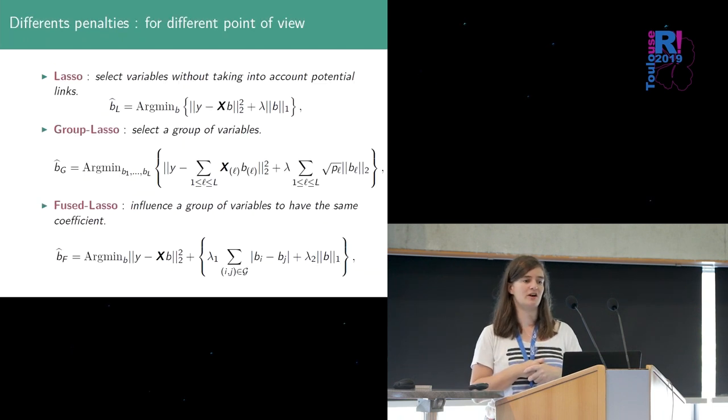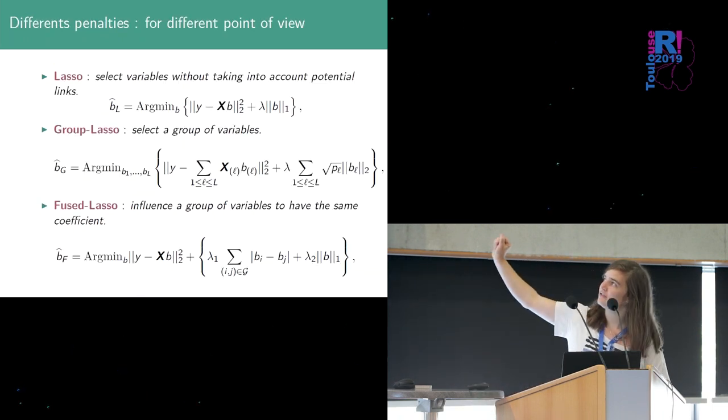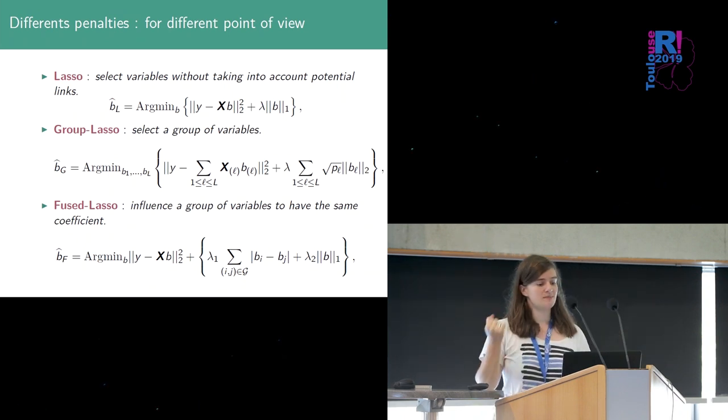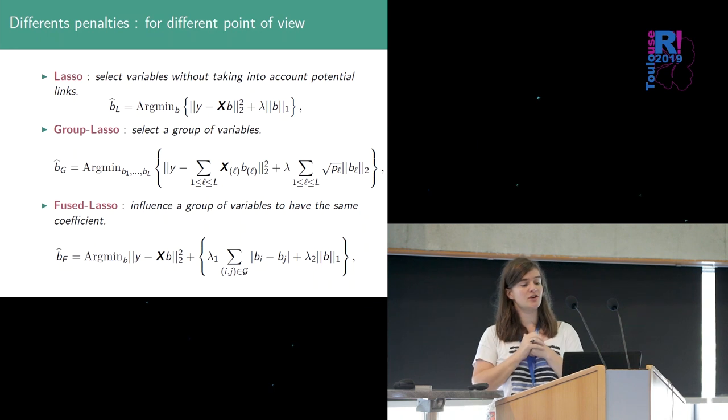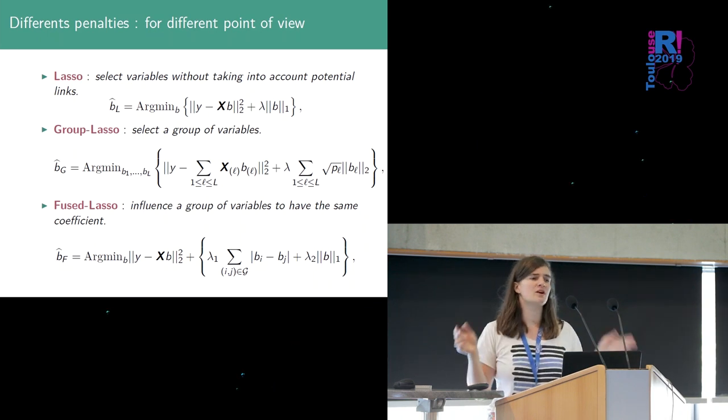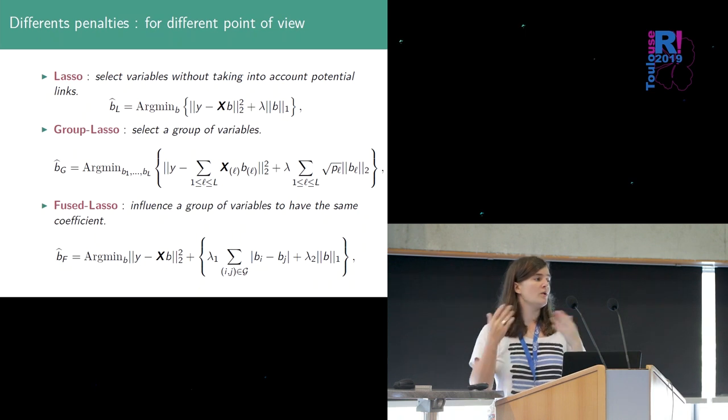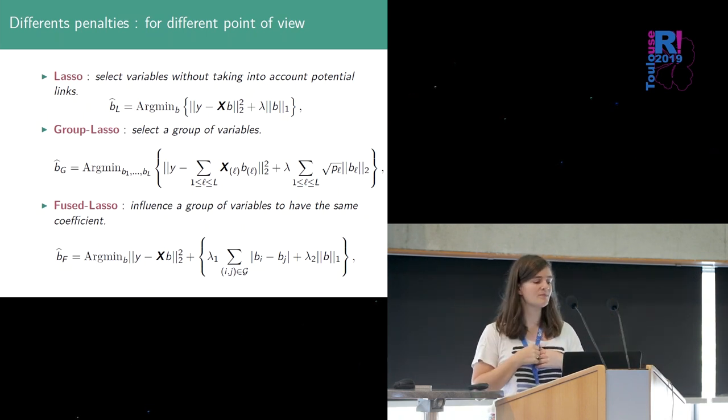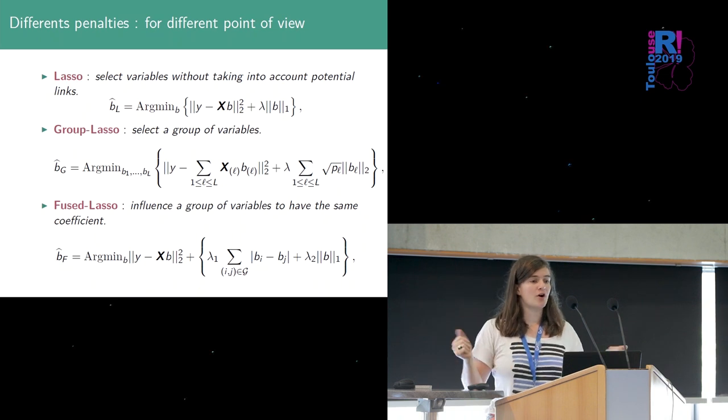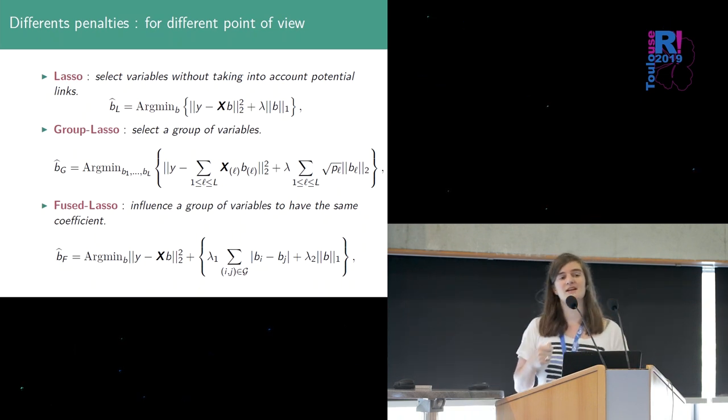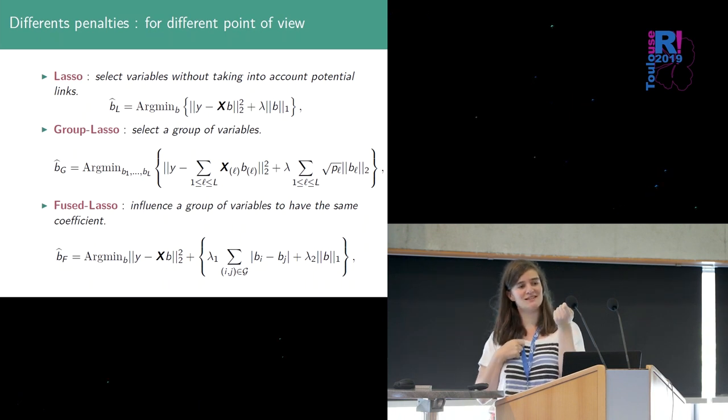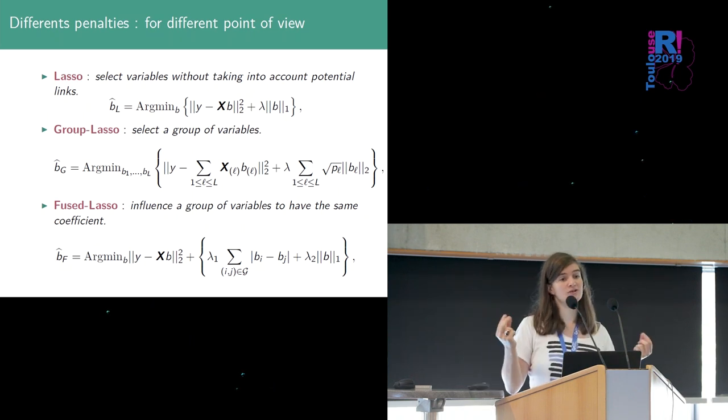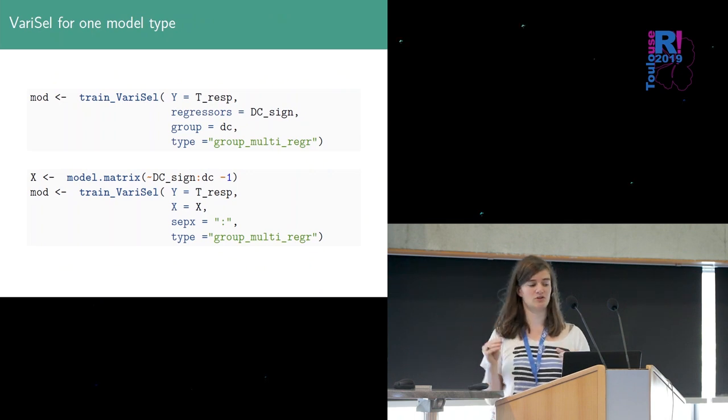I will not talk about this covariance here but I will talk about the estimation of B so we have several way to estimate B so we can use a classic lasso criterion just to select variable without taking into account any link between variable we can use a group lasso to select a group of variable altogether or fused lasso to influence two coefficient to be exactly the same to have the same value. In our example we can use group lasso to select a DC signal an association between a DC signal and the Th response for both the DC types and the fused lasso to influence this association to be the same for both of the DC type.